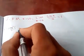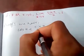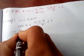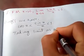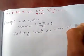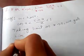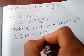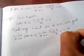I have already proved that cos(x) is less than sin(x)/x, which is less than 1. Now taking the limit as x tends to 0, we get: limit x tends to 0 of cos(x) is less than limit x tends to 0 of sin(x)/x, which is less than limit x tends to 0 of 1.